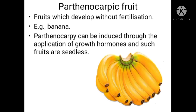Next is parthenocarpic fruit. Normally fruits develop from the ovary after fertilization, but there are fruits which develop without fertilization — these are called parthenocarpic fruits. For example, banana is a parthenocarpic fruit. Parthenocarpy can also be induced artificially by the application of growth hormones. Growth hormones like auxin can be applied for the production of parthenocarpic fruits in tomatoes.